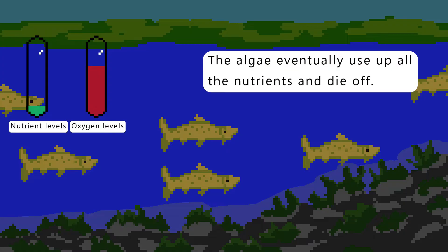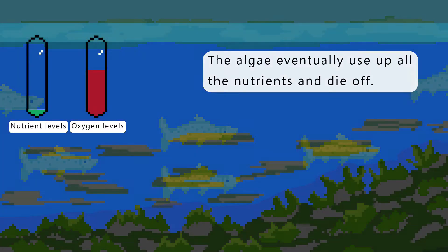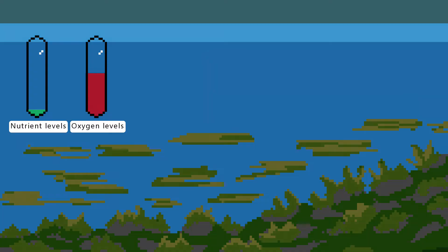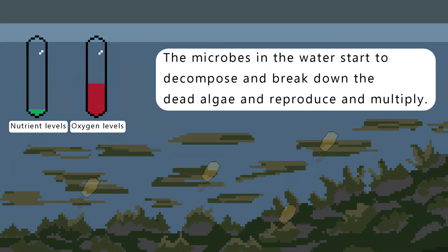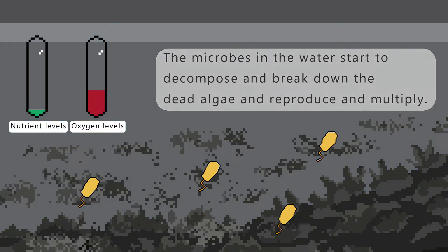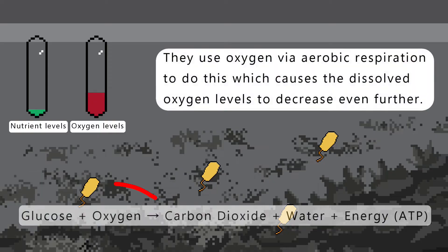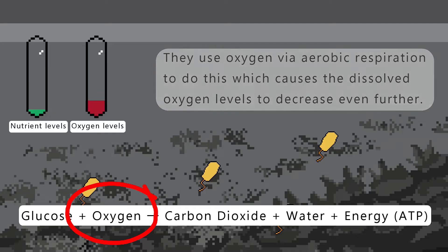The algae and plants eventually use up all the nutrients and die off. This is a random increase in nutrients, and the waterway in this specific location can't support that high number of plants for an indefinite amount of time. The microbes in the water start to decompose the now dead plants and algae, breaking them down, and the microbes begin to reproduce and multiply. They use oxygen via aerobic respiration to do this, which causes the dissolved oxygen levels to decrease even further.